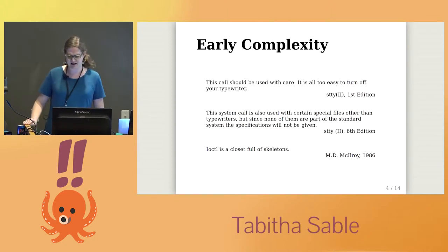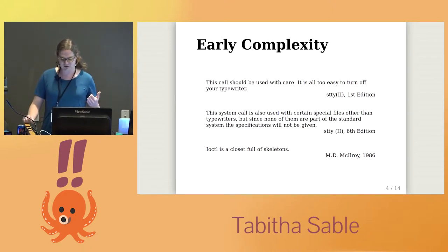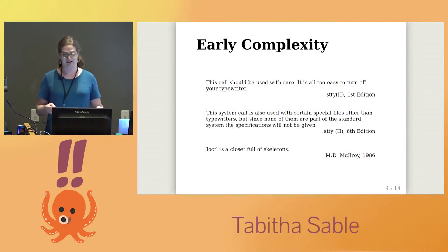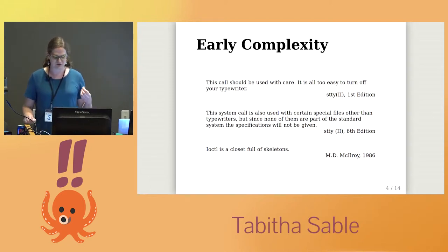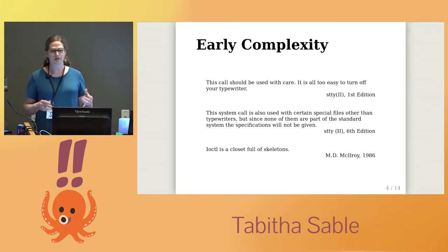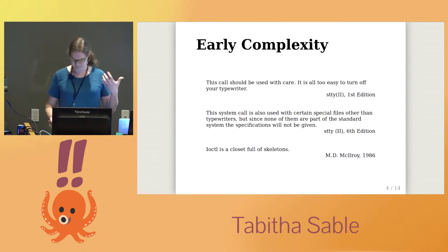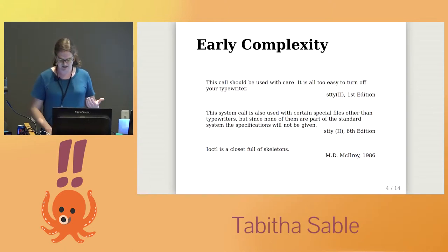Even in these early days, there was a lot of complexity. In the first edition manual from 1971, we see that 'init' was doing heuristic auto-detection between teletype model 37s and GE Terminet 300s. By the next year, they supported the IBM 2741, which meant on-the-fly conversion between ASCII and EBCDIC. A few years later, by 1975, the sixth edition manual documents the STTY command providing package options, so that after you log in you run the right package for the brand of terminal you're sitting in front of and it magically makes everything work for you.